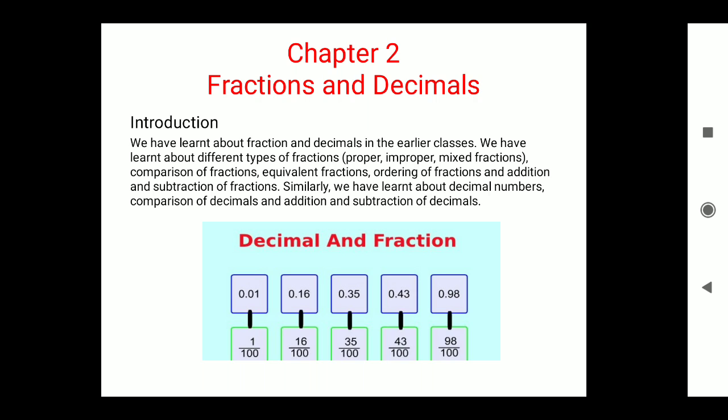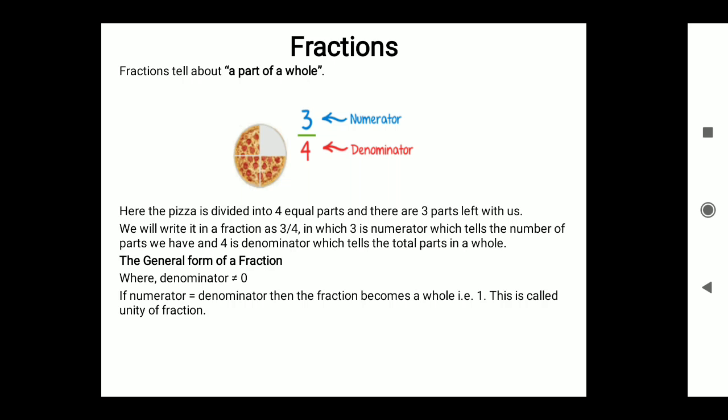For example, 1/2 of a pie is half of a pie. Students, we have learned about fractions and decimals in earlier classes — different types of fractions: proper, improper, mixed, comparison of fractions, equivalent fractions, ordering of fractions, addition and subtraction of fractions, decimal numbers, comparison of decimals, and addition and subtraction of decimals.